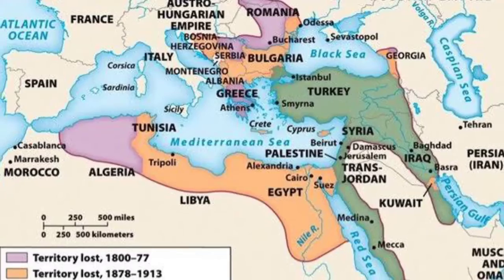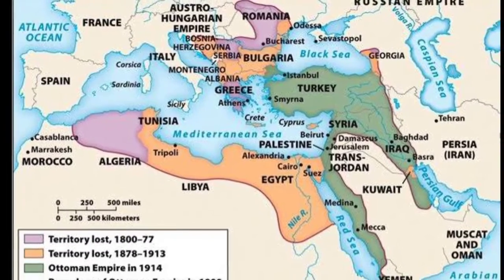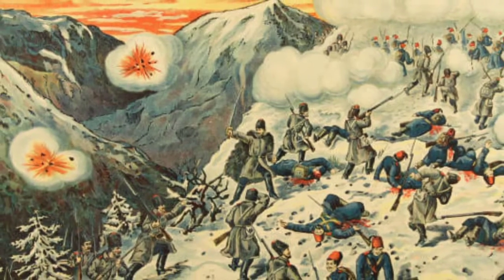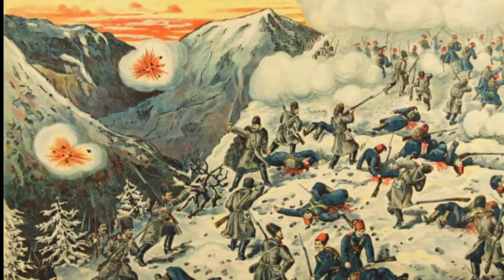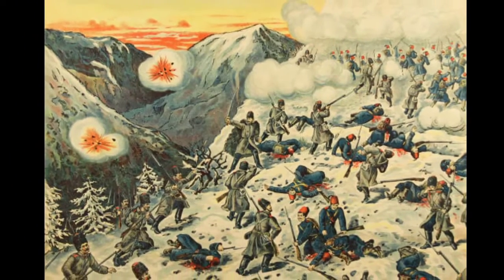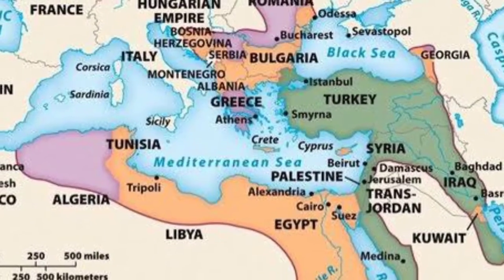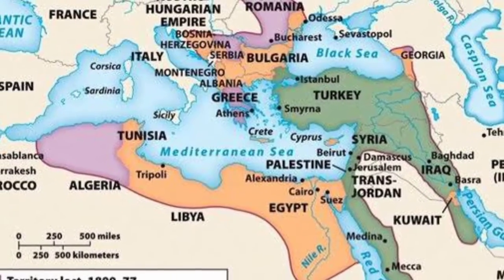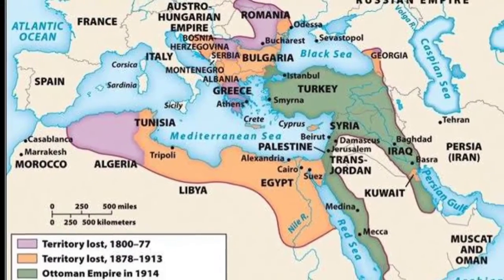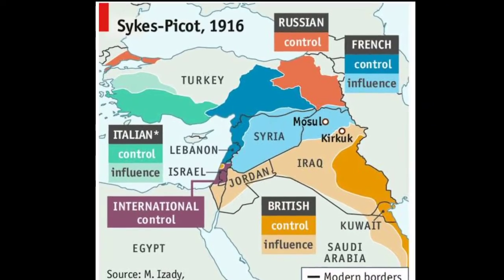The partition of the Ottoman Empire, from 30 October 1918 to 1 November 1922, was a geopolitical event that occurred after World War I and the occupation of Constantinople by British, French, and Italian troops in November 1918. The partitioning was planned in several agreements made by the Allied powers early in the course of World War I, notably the Sykes-Picot Agreement.